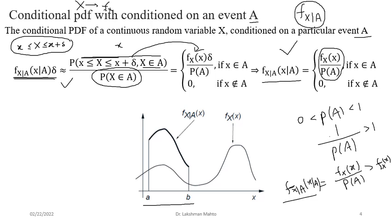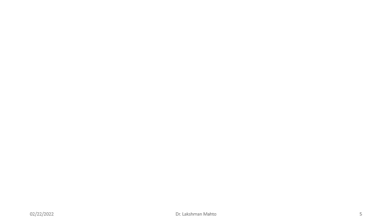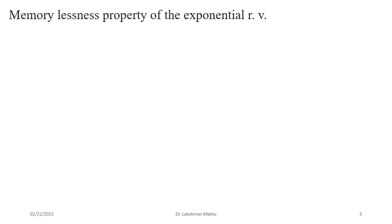This is the definition of conditional PDF. Later we will define conditional PDF with respect to two random variables X and Y. Now let us do a few interesting example applications of conditional PDF. One interesting application is in the case of memorylessness. You have already seen the geometric random variable; right now we talk about the exponential random variable.